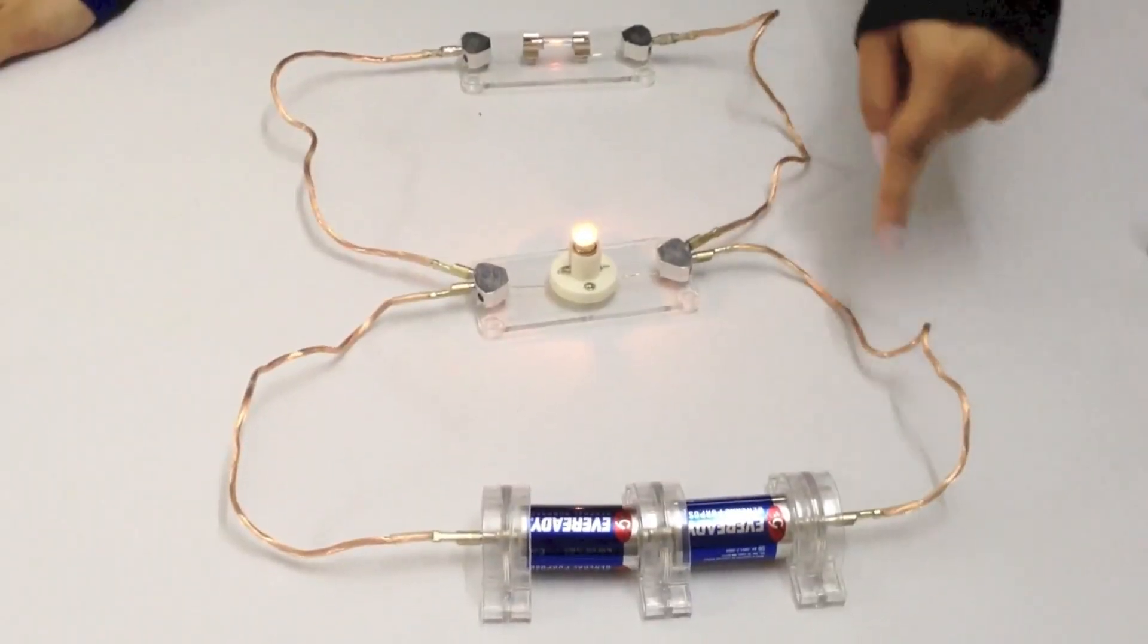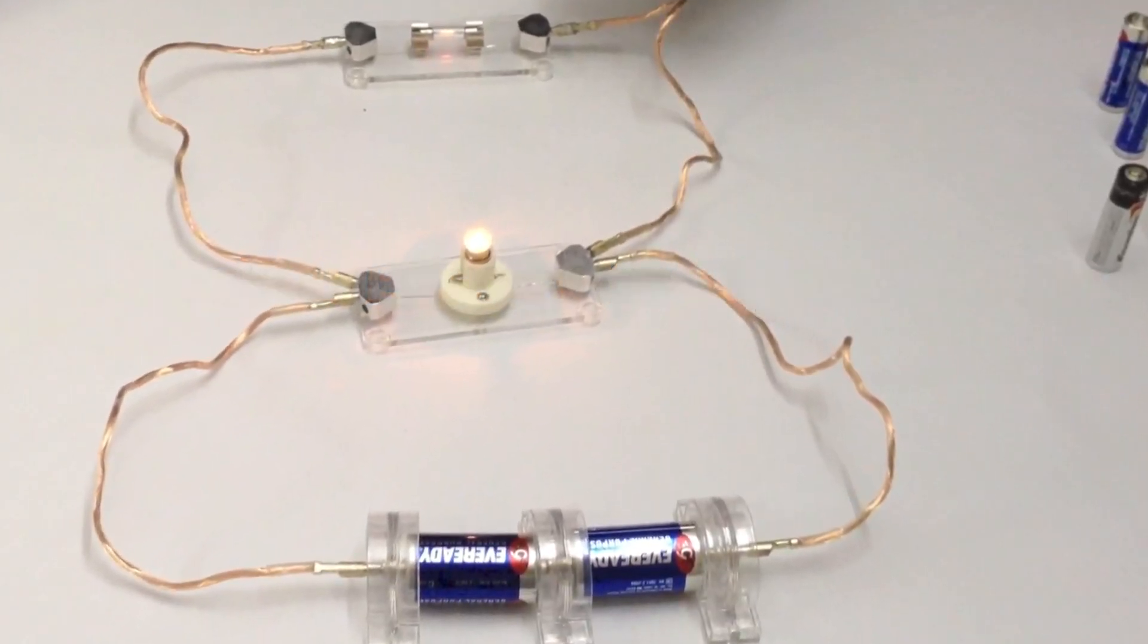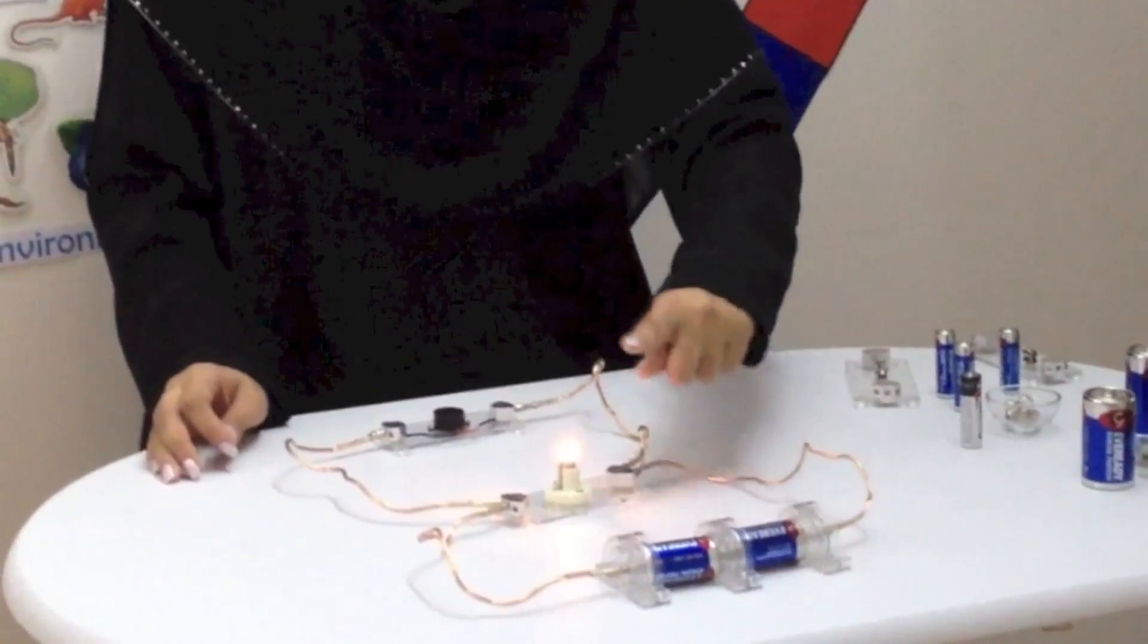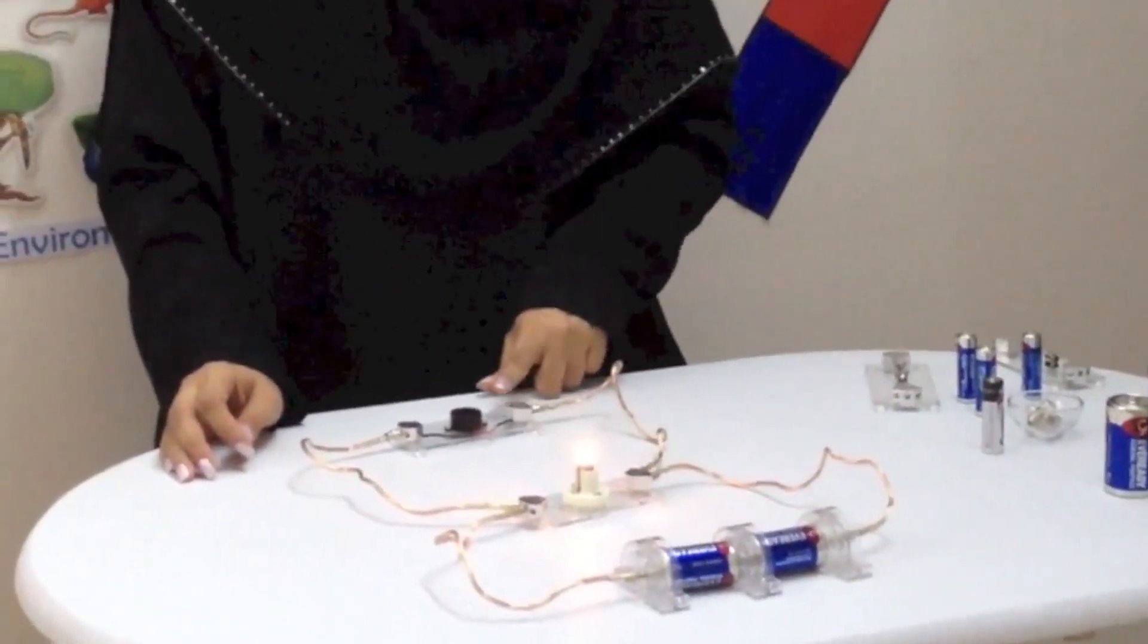Here I have connected two bulbs to the circuit. This means there are two resistors in the same circuit. The electrical energy first converts into light energy, then it converts into sound energy.